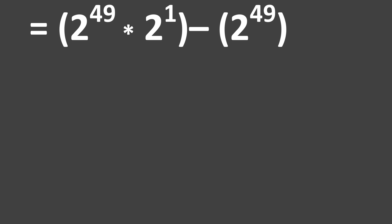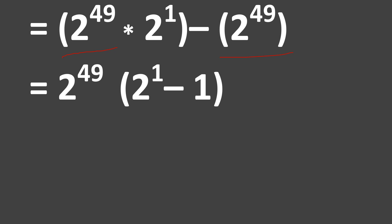Now that we have broken down the expression of 2 raised to the power of 50 minus 2 raised to the power of 49 — that is, 2 raised to the power of 49 times 2 raised to the power of 1, all enclosed in a bracket — by observation, you can see that 2 raised to the power of 49 appears in both terms. So we can actually factorize, that is, bring it out.